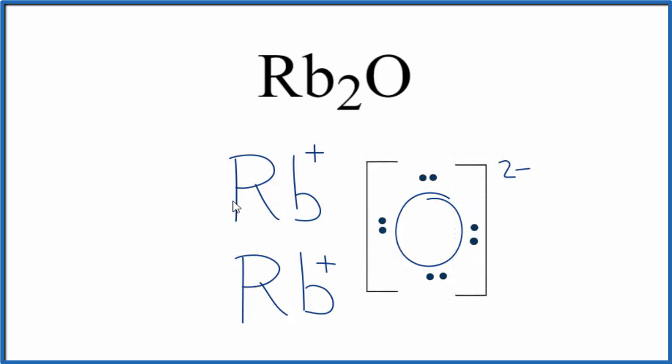Sometimes you'll see brackets placed around the metal as well. That's okay. So this is the Lewis structure for Rb2O, rubidium oxide.